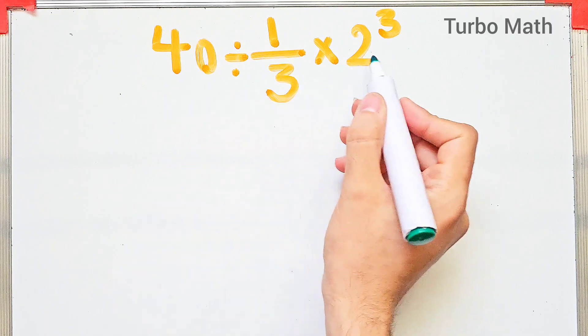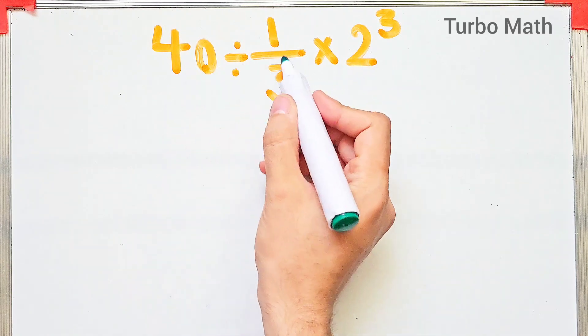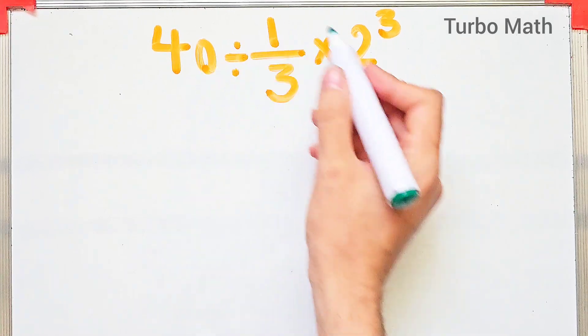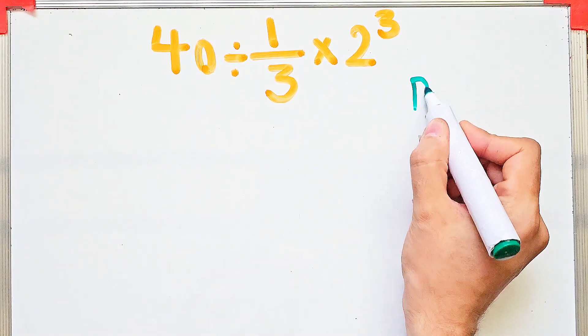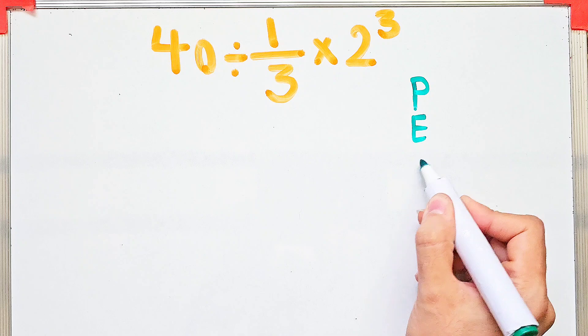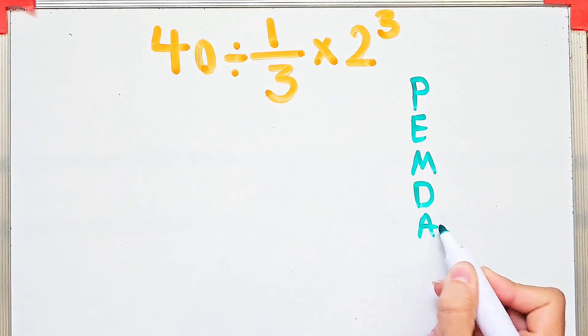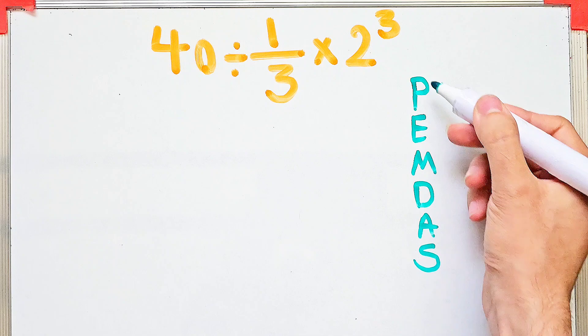Hi friends, welcome to Turbo Math channel. 40 divided by 1/3 then times 2 to the power of 3. To solve this question we need to follow a rule which is PEMDAS. PEMDAS shows the priority of mathematical operations. If you don't pay attention to this rule, you get the wrong answer.